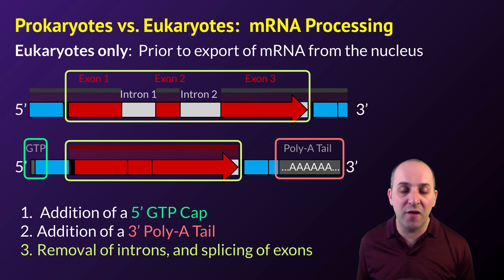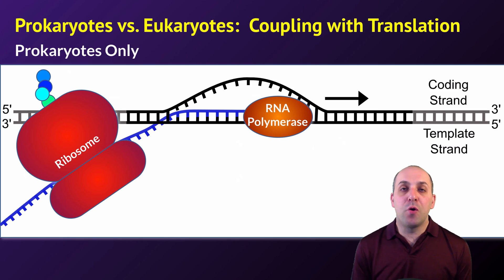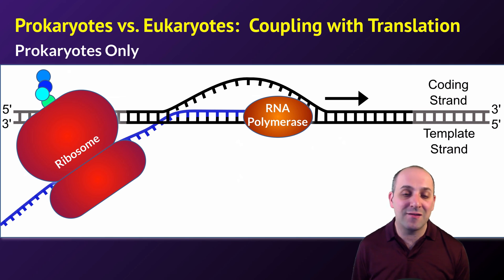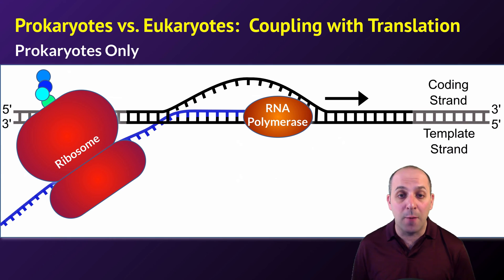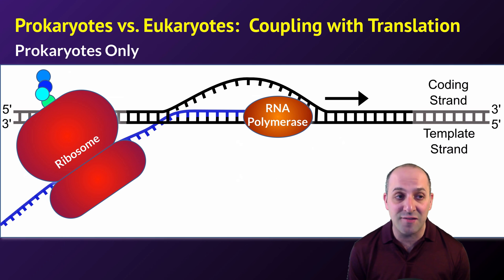If you were to take an unspliced transcript and put it into a ribosome, that ribosome would make a garbage protein because introns contain genetic misinformation for the production of that protein. The last major difference between prokaryotic and eukaryotic transcription is the coupling with translation. This can only happen in prokaryotes because the DNA is not kept in a nucleus — so as RNA polymerase produces a transcript, the ribosome can simultaneously begin translating it. That's what we call direct coupling. Eukaryotes can't do this because transcripts need to be processed before they can be exported from the nucleus and sent to the ribosome.